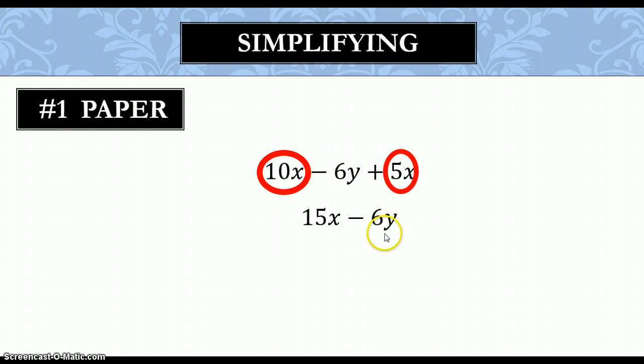So, we just simply bring that down. We didn't do anything to it. Therefore, it stays the same. And we have 15x minus 6y. Now, again, because I am not evaluating this and because there is no equal sign anywhere on this problem, this is where I stop. All I had to do was simplify this.